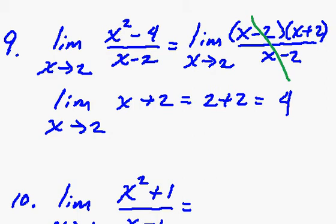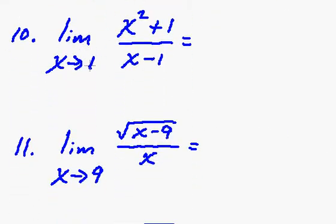Now this problem here, number ten, if we plug one in the bottom we get zero and if we plug one in the top we end up getting one squared plus one is two. Now you notice you can't factor the top. So we end up with two over zero and remember when we get zero in the bottom that means that the limit does not exist. And really what's going on here is we have a vertical asymptote at x equals one.